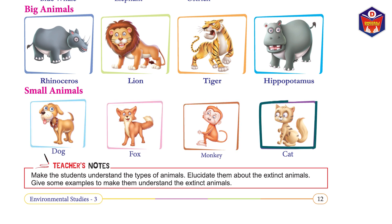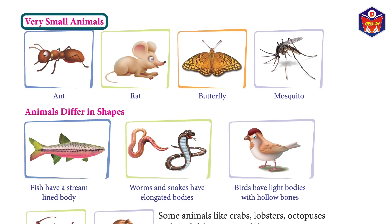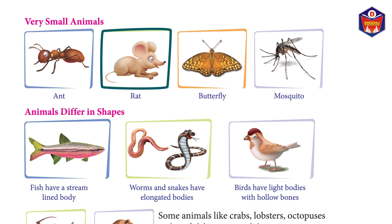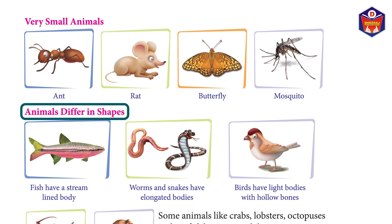Teachers' notes: make students understand the types of animals and explain extinct animals with examples. Very small animals include the ant, rat, butterfly, and mosquito.